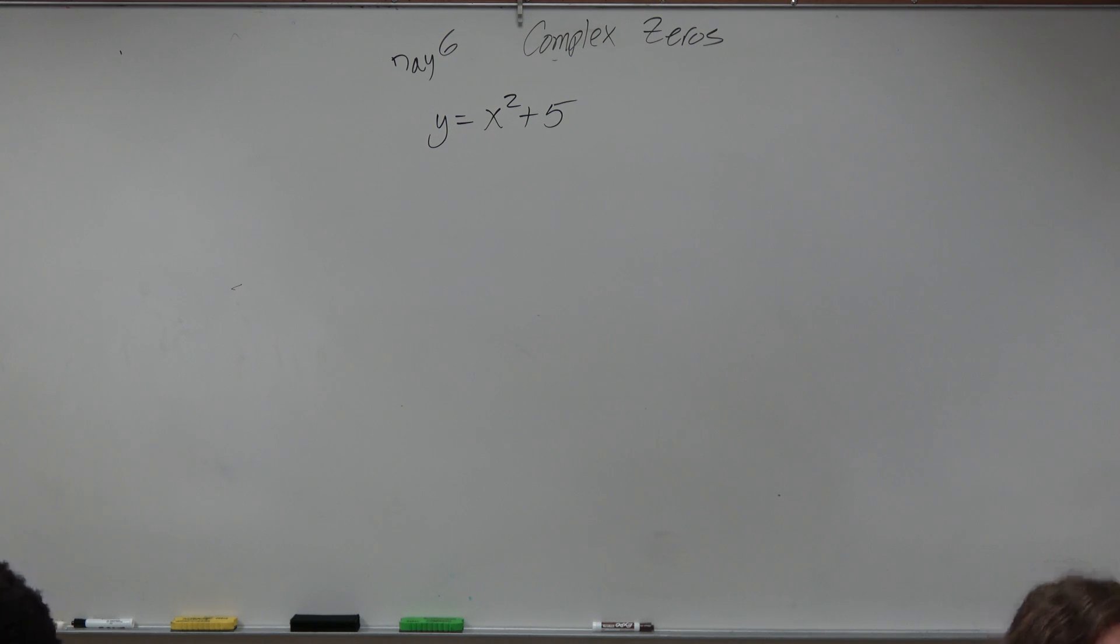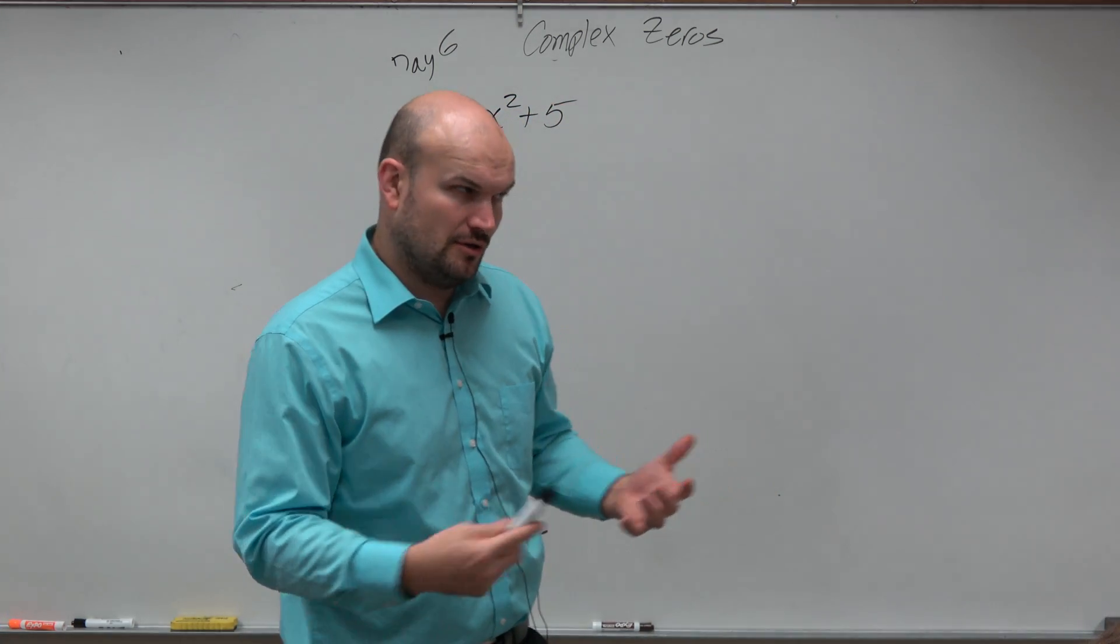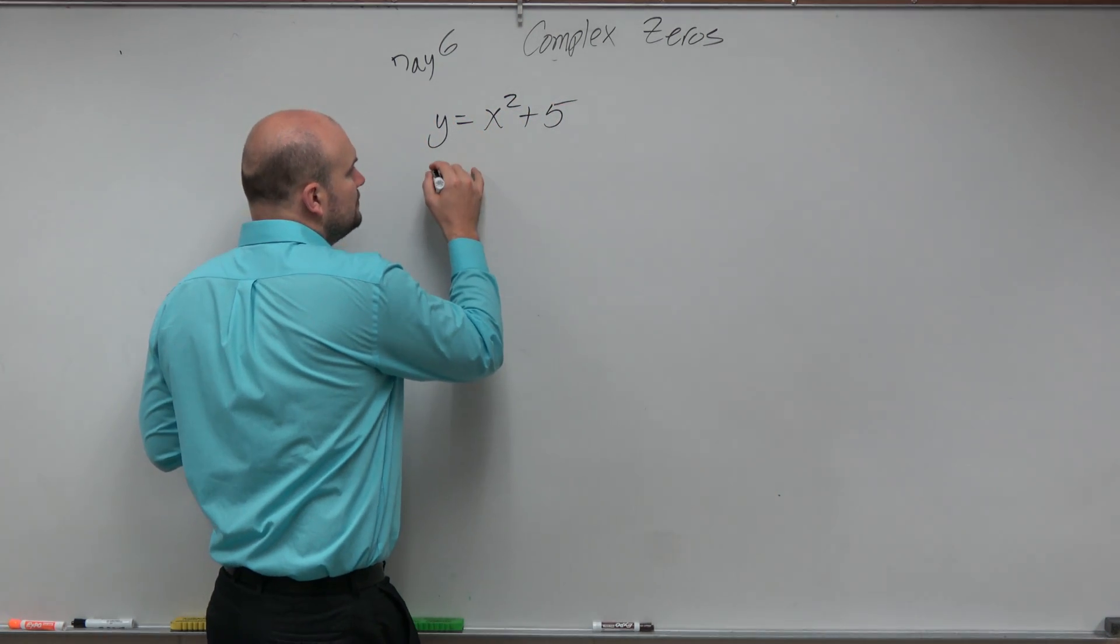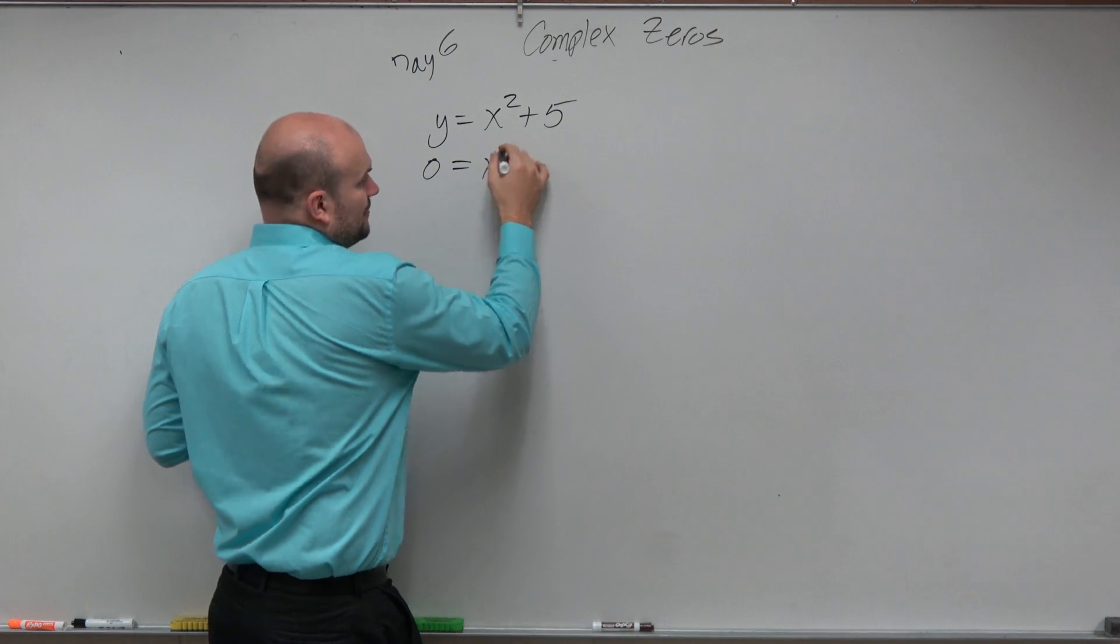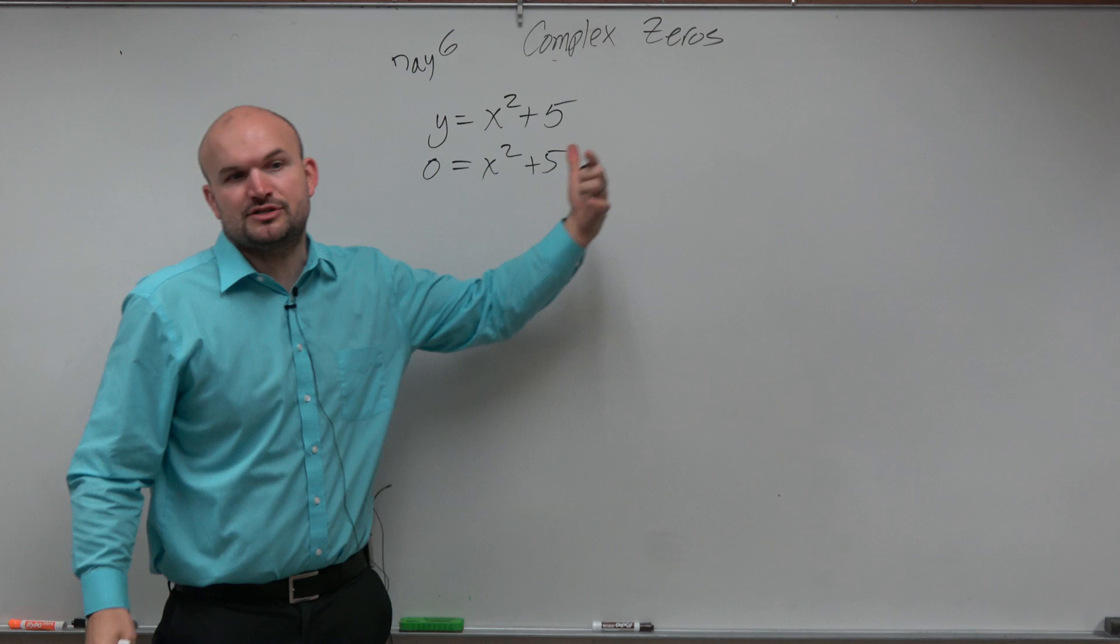We want to find the values of x that make the equation equal to 0. This equation is not equal to 0, so all we have to do is set the equation equal to 0. Finding the zeros are the values of x that make this equation true.